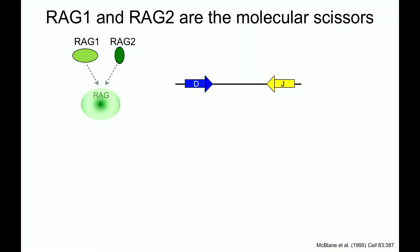RAG1 and RAG2 are the molecular scissors. They come together — each individual, very distinct proteins — forming a complex we call RAG. That complex binds to the DNA. But it doesn't bind to the V's, D's, and J's directly. What it binds to is a conserved sequence motif next to the V, D, and J called a recombination signal. That's how it knows where to bind in the chromosome. After binding, it cuts the DNA and generates specific products.